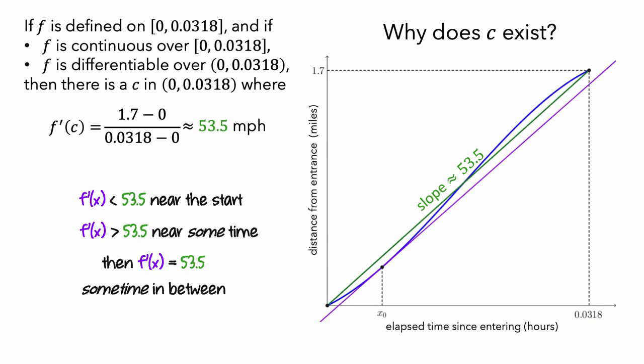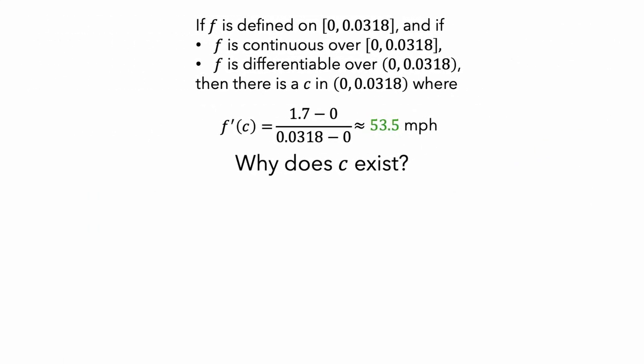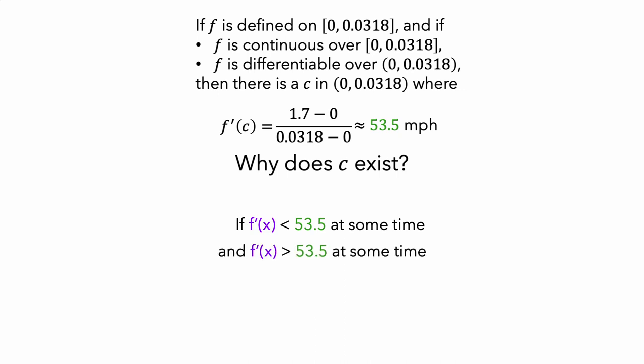To summarize what we've seen: the mean value theorem says that there was some moment in time where the car's instantaneous speed was equal to its average speed. How do we know that such a moment in time exists? The main reasoning was that if the instantaneous speed was less than the average speed at some time in the interval and was greater than the average speed at some other time in the interval, then the instantaneous speed had to be equal to the average speed sometime in between those two times. And this would also have worked if our inequalities weren't strict. So this is intuitively why the mean value theorem is true.